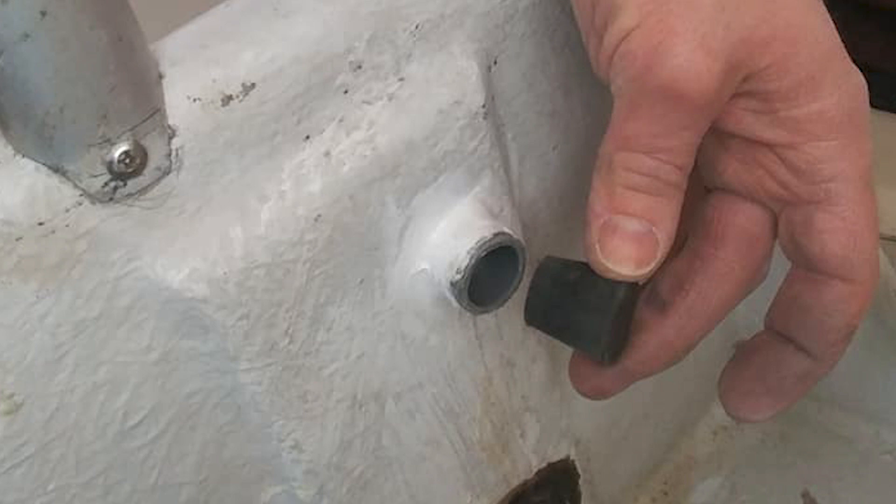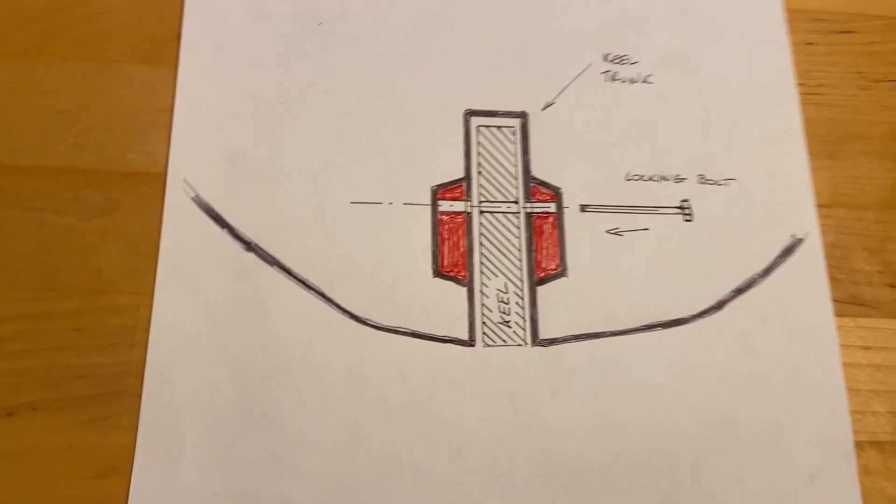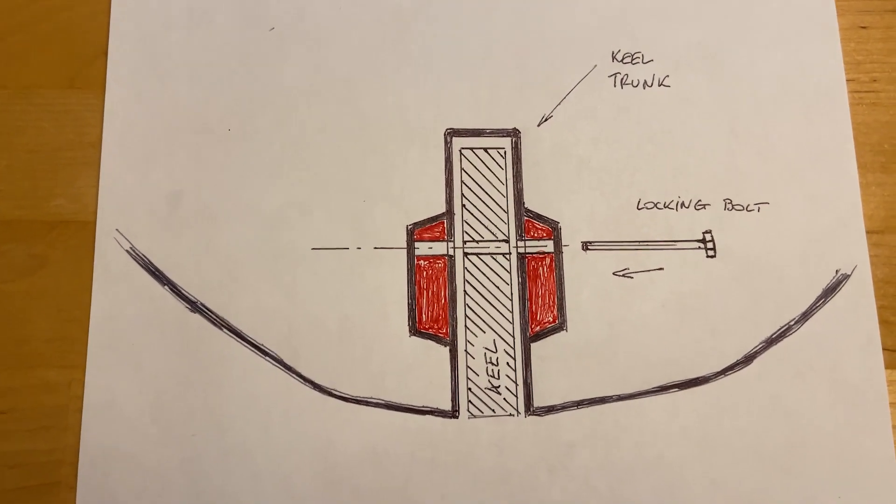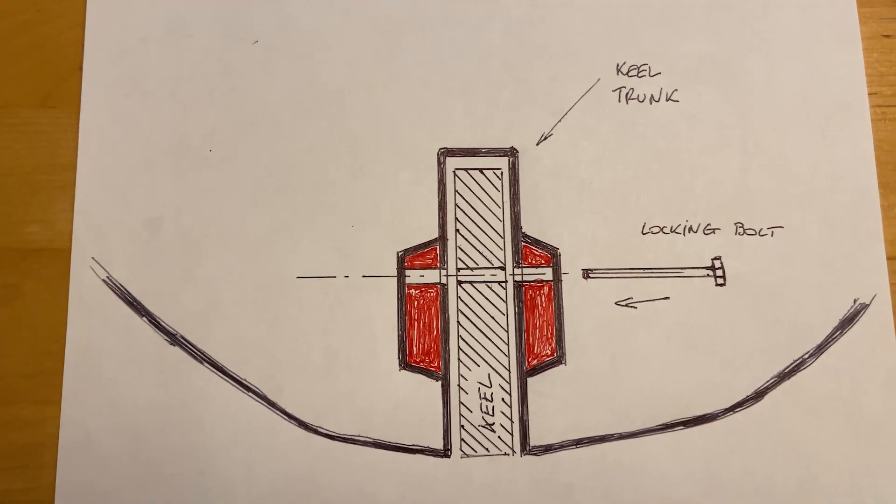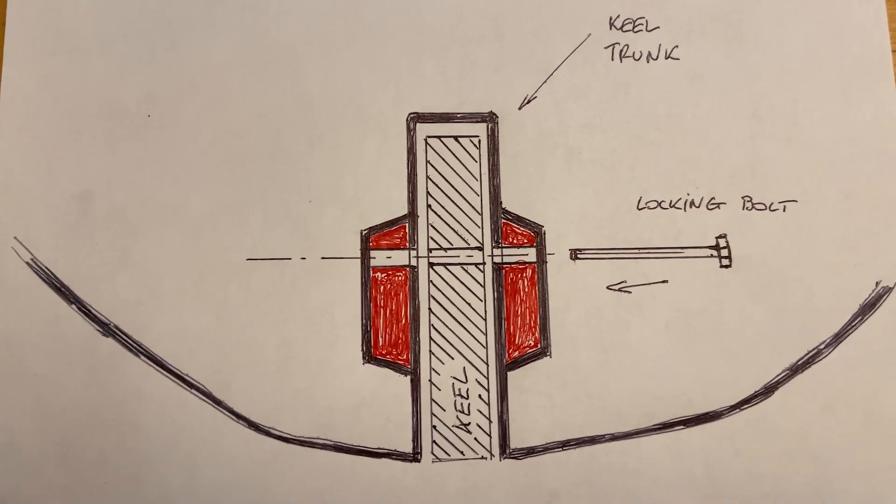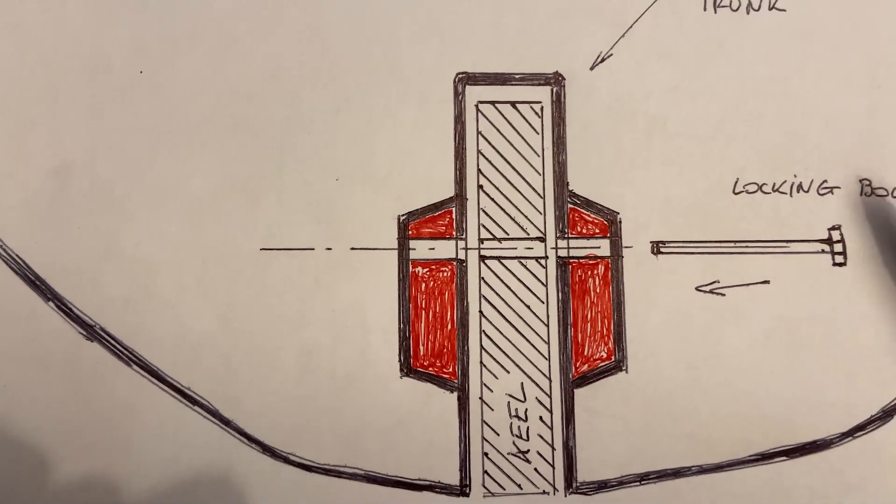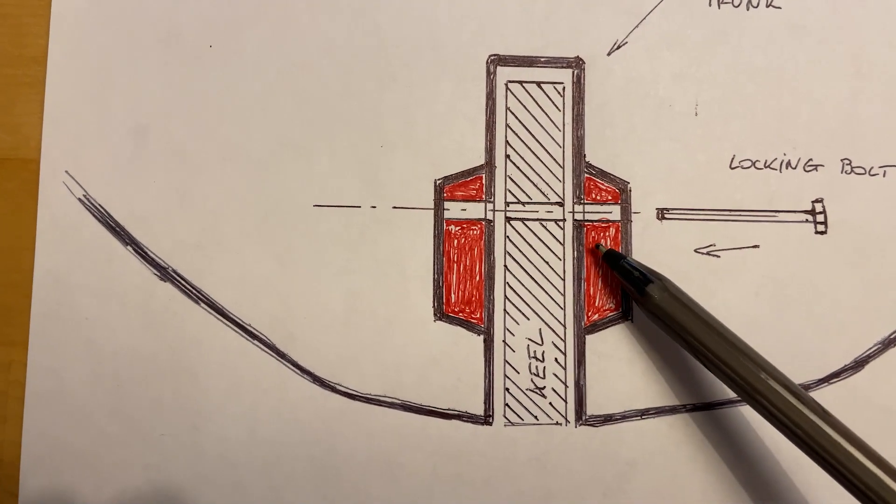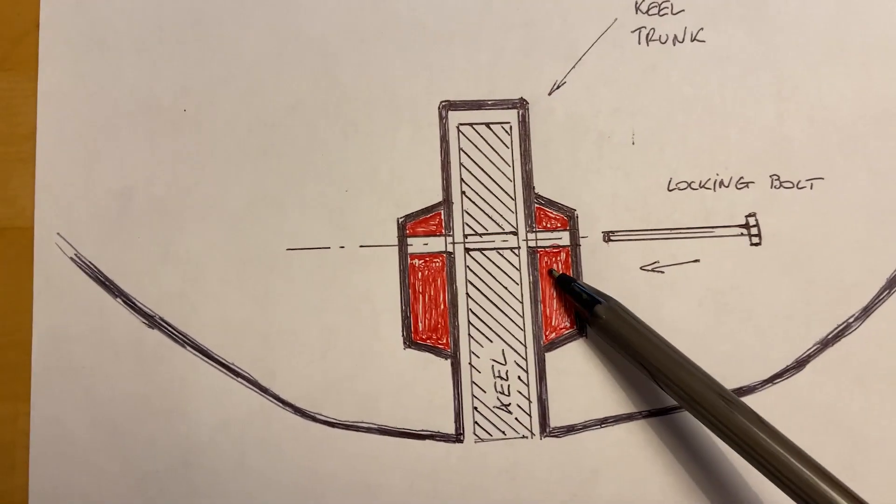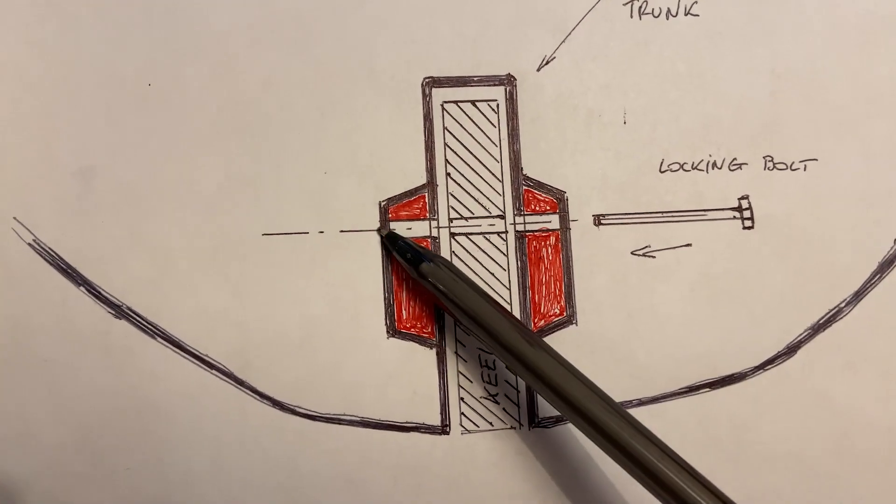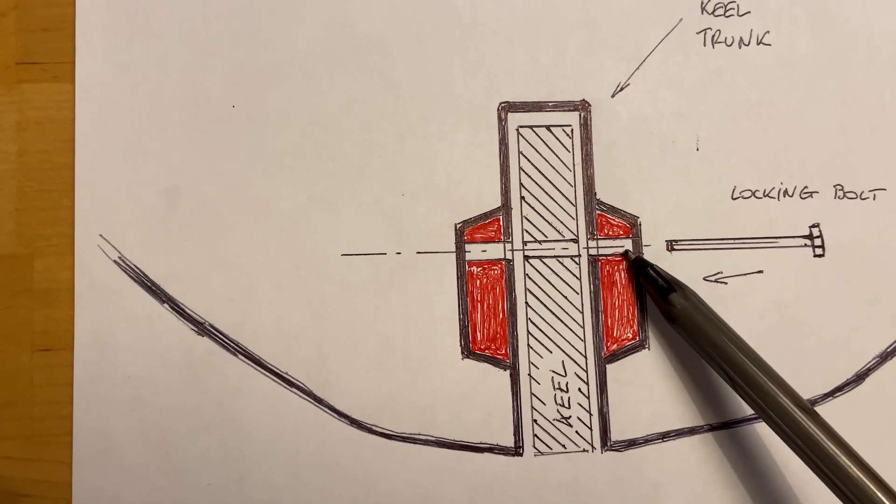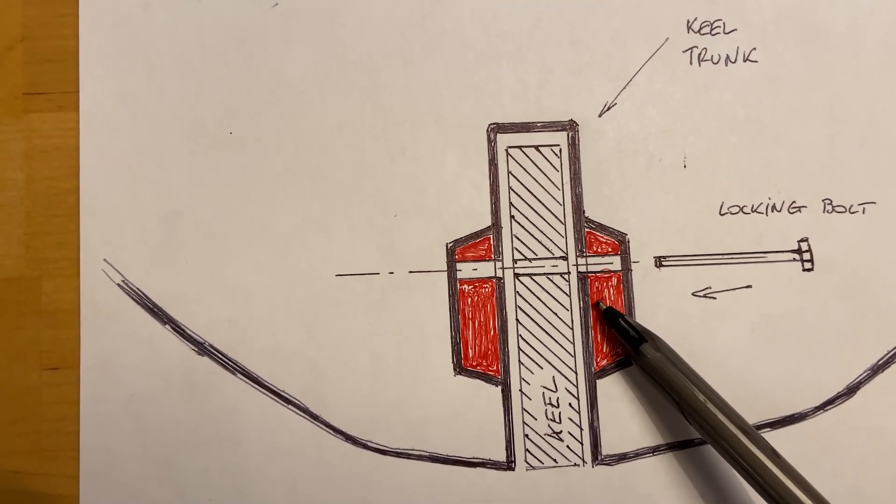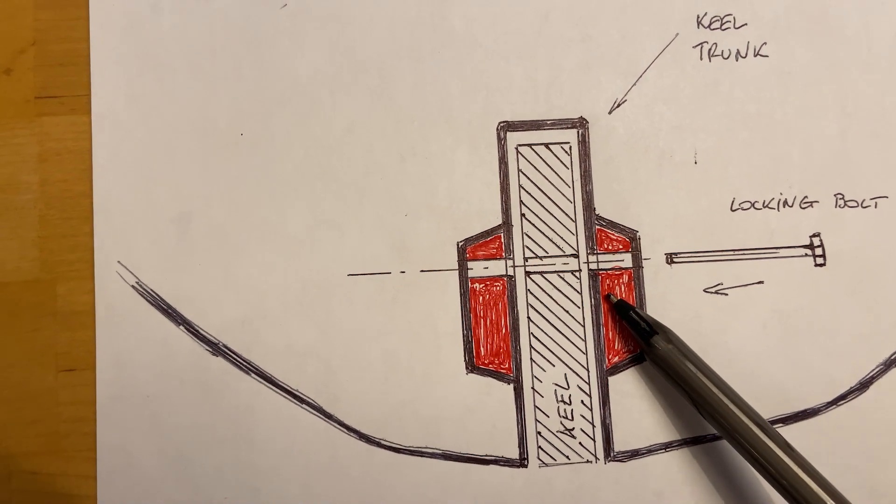So anyone can understand better what I meant with that fix, if you look at the keel trunk which I did a drawing of here, one problematic area is this red stuff. The keel trunk is enlarged where the keel bolt pin is inserted.